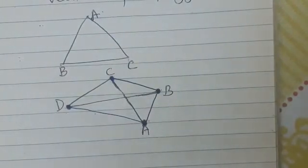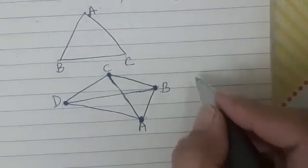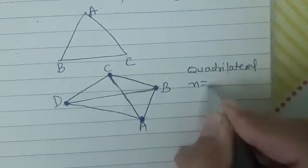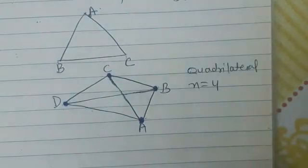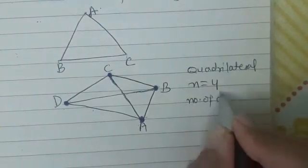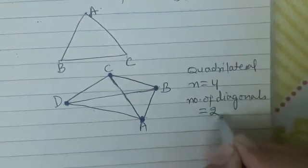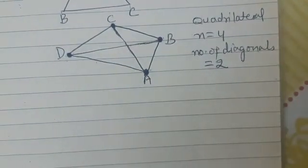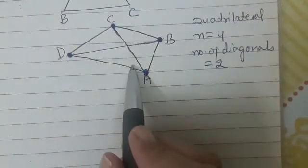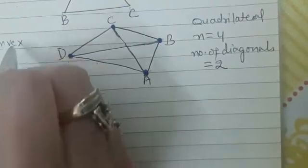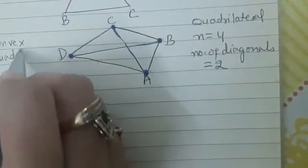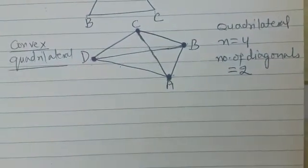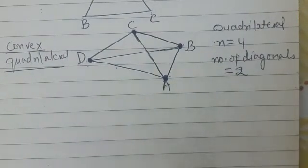So how many diagonals are there in a quadrilateral? For a quadrilateral, N equals 4 and the number of diagonals we have got is 2. This is the case of a convex quadrilateral. I hope you have seen the previous videos in which I talked about concave and convex polygons.